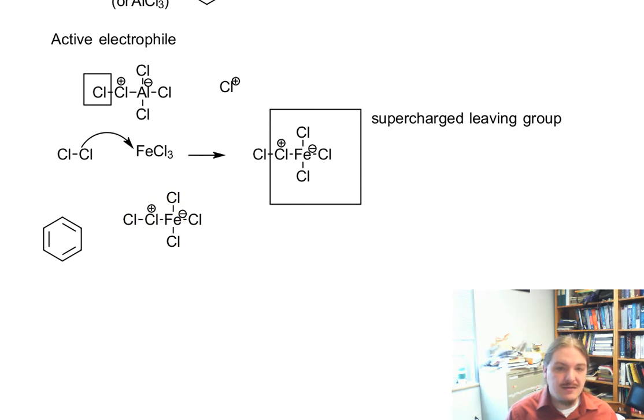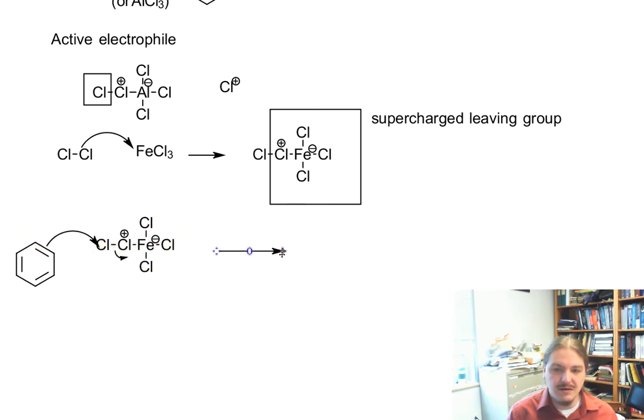Here's our electrophile. And again, remember that where I have iron, you can have aluminum depending on what reagent you're using. So you get nucleophilic attack at this chlorine. The leaving group does its thing. It leaves.